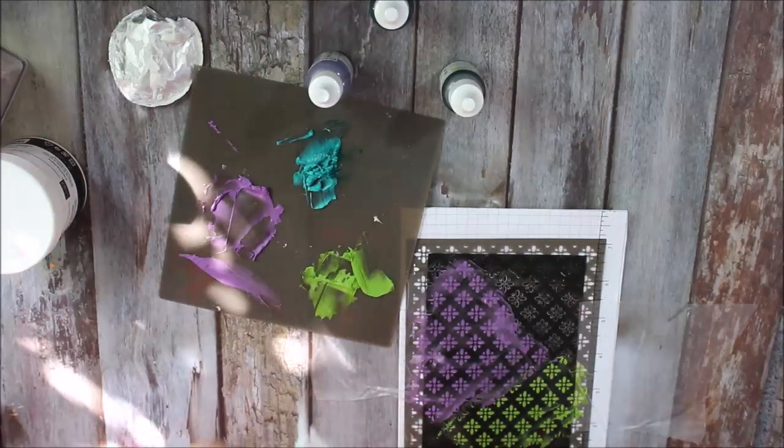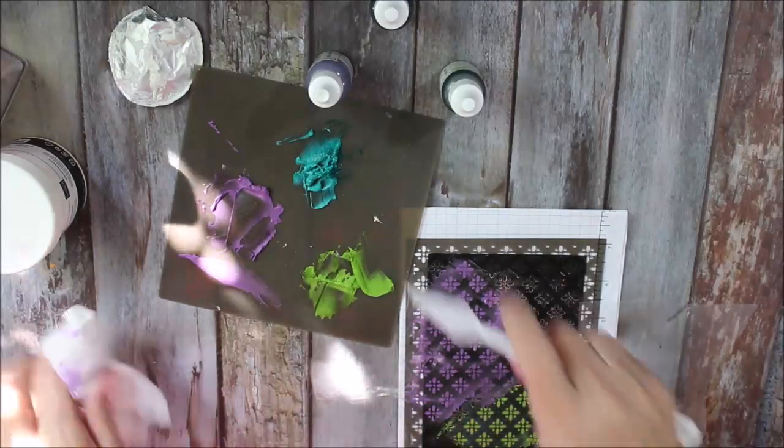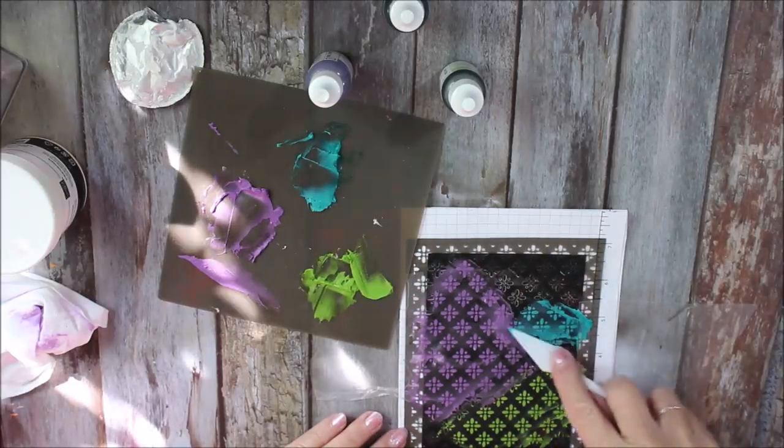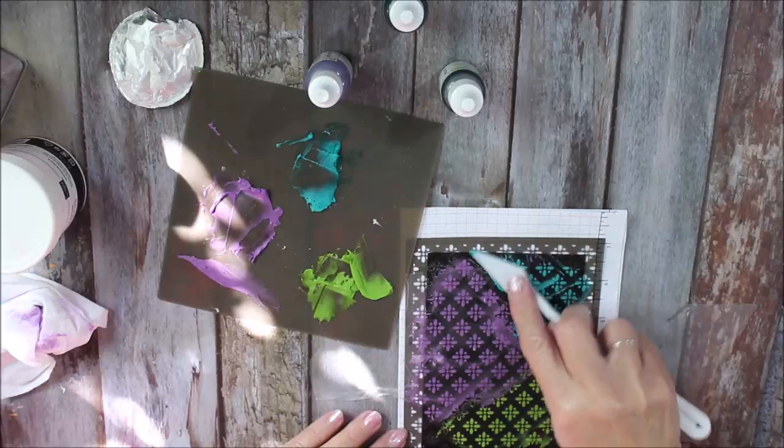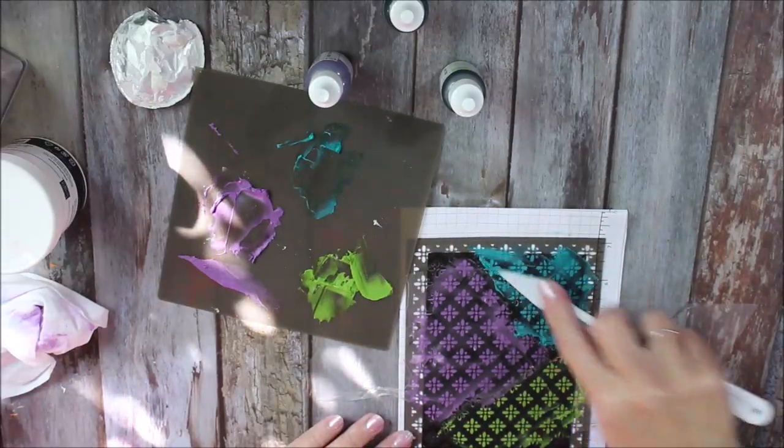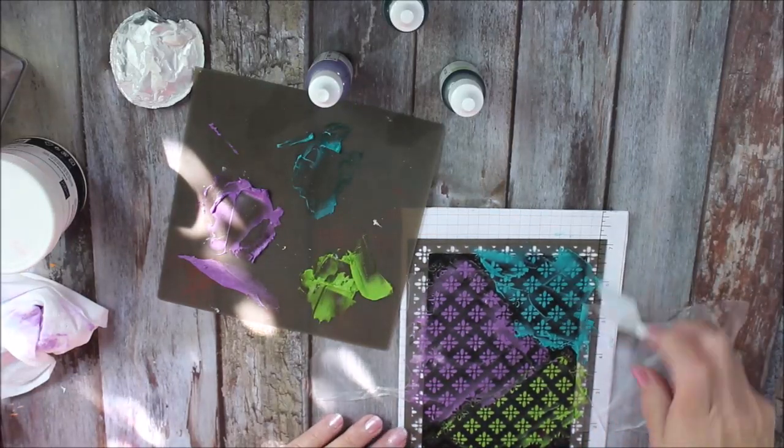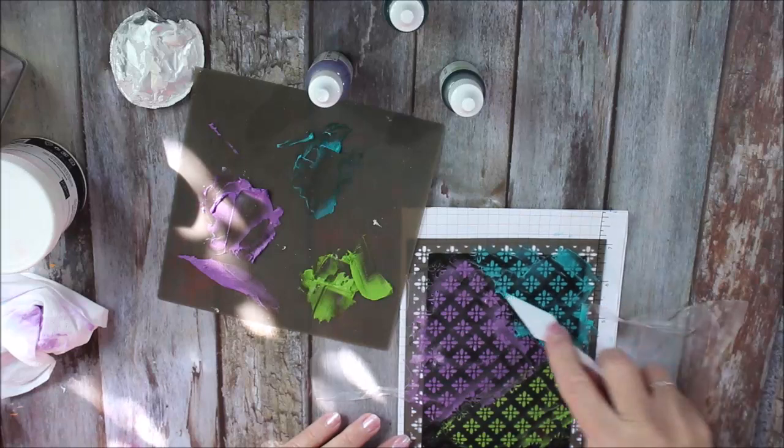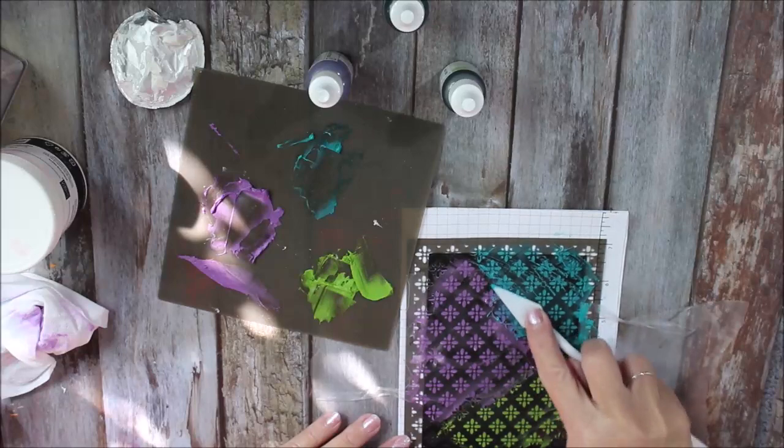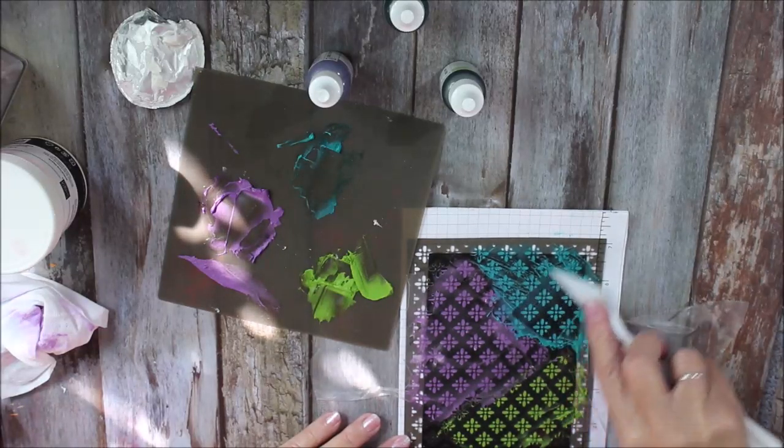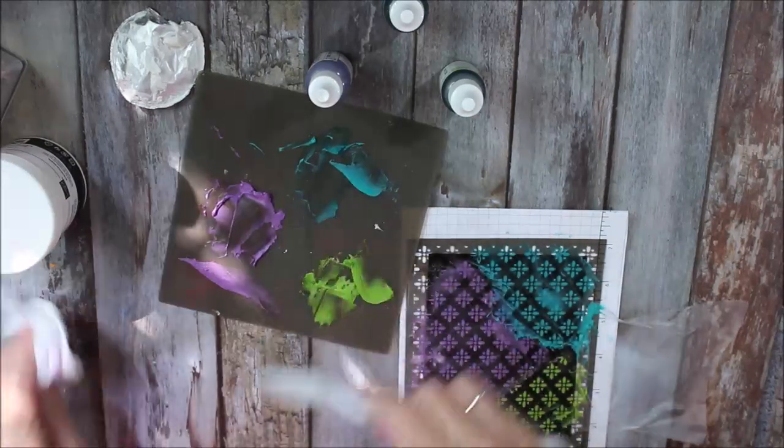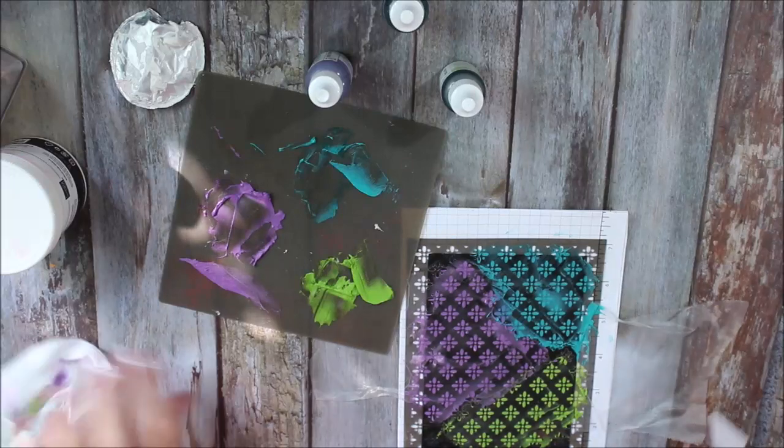And wipe that before I go on to my next color which is the Bermuda Bay. Beautiful, how vivid and bright is that? That's just lovely, I'm really happy with that. So I'm not doing the whole card front, I'm just doing, if you want to add a bit of texture just move your palette knife up. This one I'm going to do smooth.